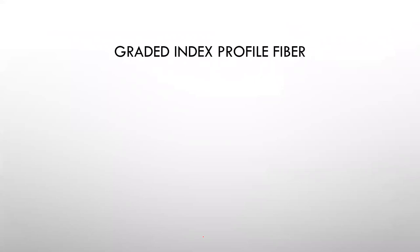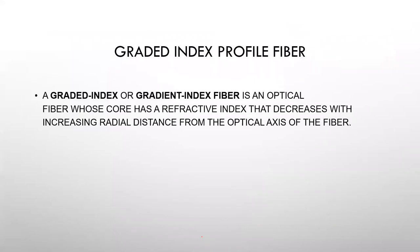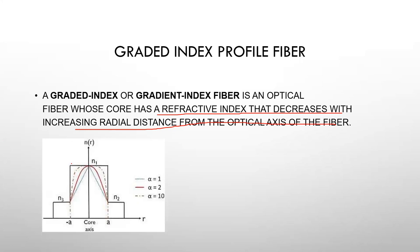The third type is graded index profile fiber. A graded index fiber is an optical fiber whose core has a refractive index that decreases with increasing radial distance from the optical axis. Looking at the center, the refractive index decreases gradually. The step index fiber has a sharp edge profile, while the graded index fiber has a curved, gradual edge profile.